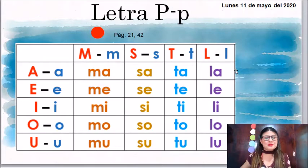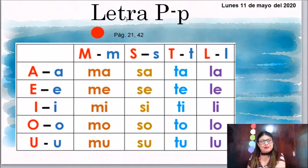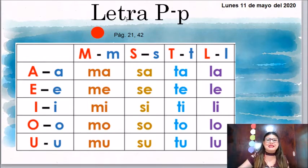Este día vamos a estar trabajando con nuestro código de color rojo, que es lenguaje y comunicación. Nuestro tema a ver es la letra P. Pero antes de seguir avanzando con la letra P, es muy importante repasar las vocales y consonantes que ya conocemos. Así que necesito que me sigas y que lo hagamos juntos.